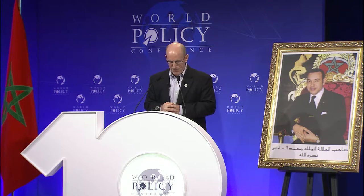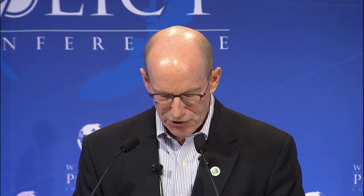If the renegotiation fails and NAFTA is abrogated, the snapback for Canada is to the U.S.-Canada FTA, and you can imagine the U.S. and Canada basically working out a new deal that modernizes that agreement. But for Mexico, the threat is much more existential. There would be real impact in terms of production in Mexico. And strangely, from a Trump standpoint, the likelihood would be a depreciation of the peso and an increase in the bilateral trade imbalance — not a reduction.